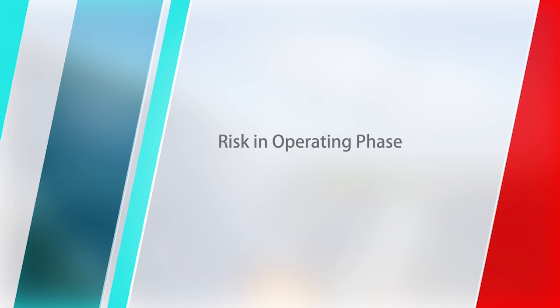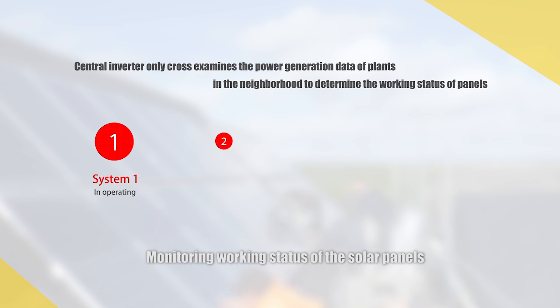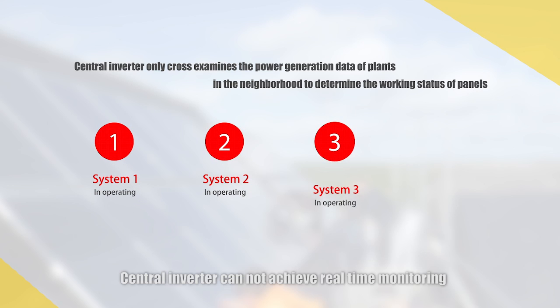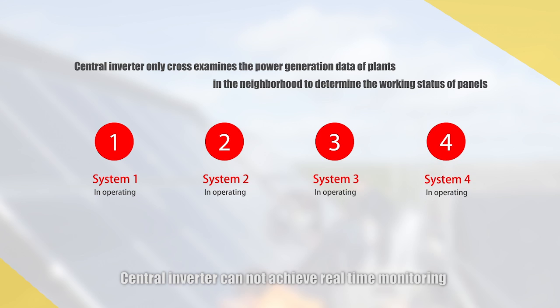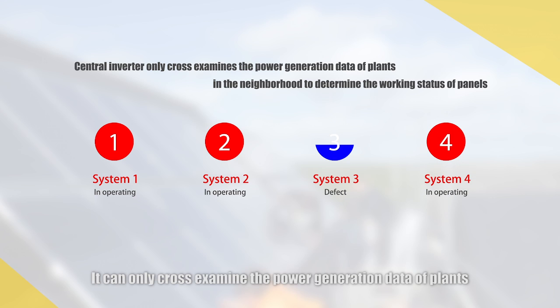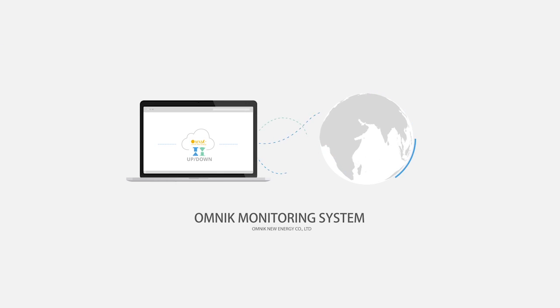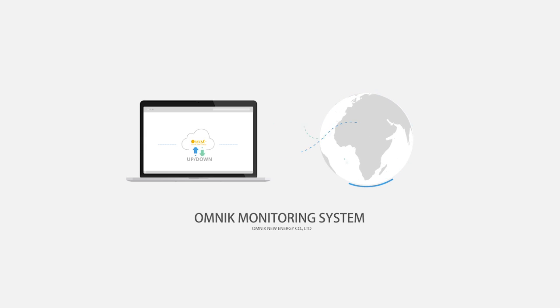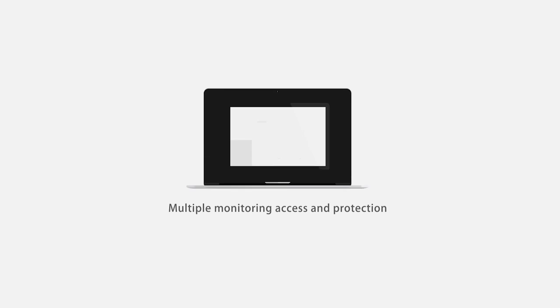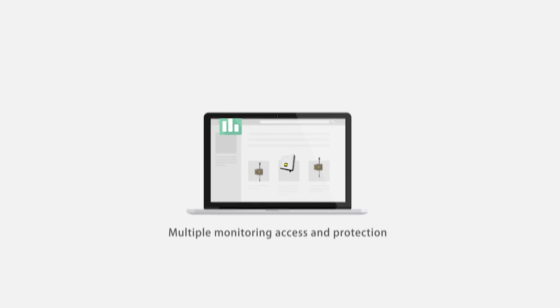Regarding risk in the operating phase and monitoring of working status: central inverters cannot achieve real-time monitoring — they can only cross-examine the power generation data of neighboring plants to determine the working status of panels. Each string inverter can detect malfunction, narrowing the scope of defective panels down to dozens. Micro inverters can even monitor each individual panel.